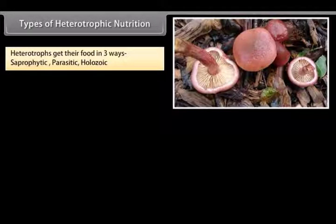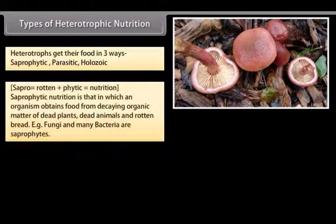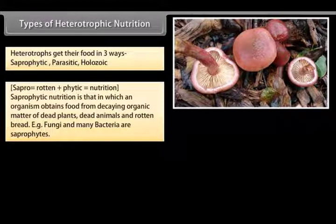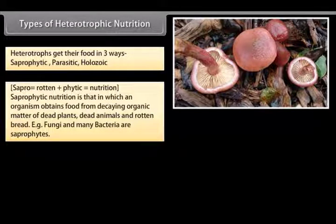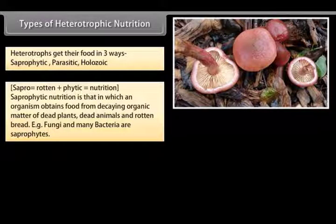Heterotrophs get their food in three ways: saprophytic, parasitic, and holozoic. Saprophytic nutrition is that in which an organism obtains food from decaying organic matter of dead plants, dead animals, and rotten bread. That is, fungi and many bacteria are saprophytes.